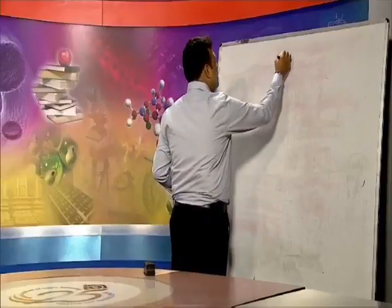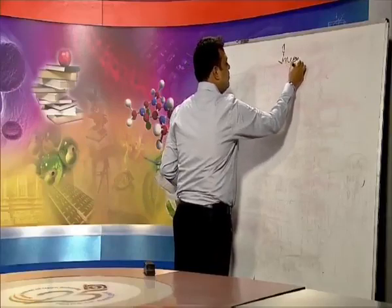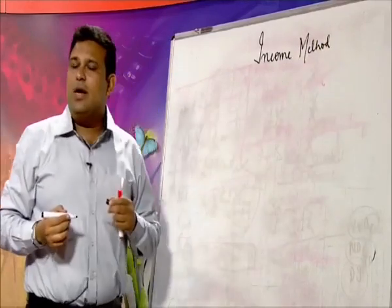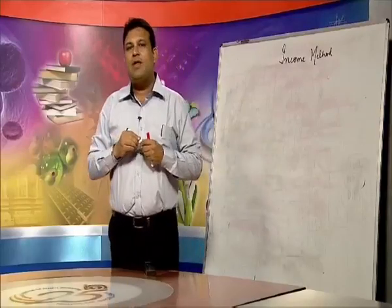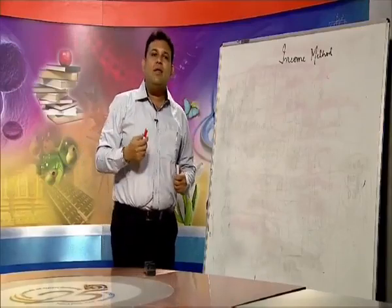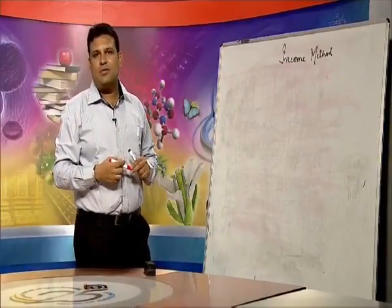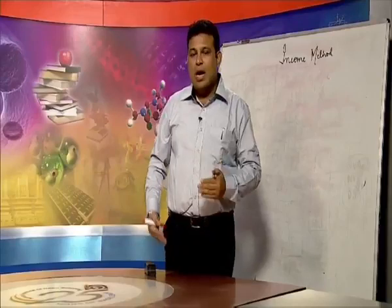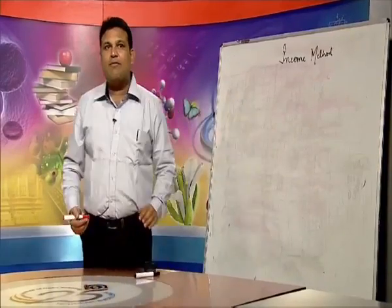The second method of estimating national income is the income method. This method is very important because it talks about how factor owners earn their income in lieu of their productive factor services. In this method also we have domestic income and national income, but this is from the earning point of view — how we earn because of our productive factor services.